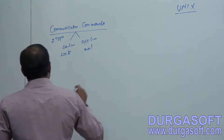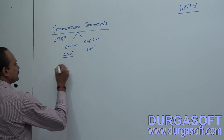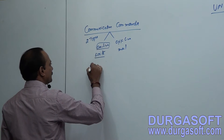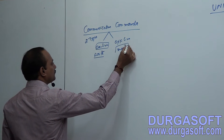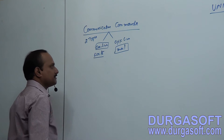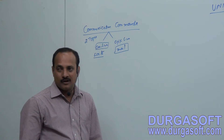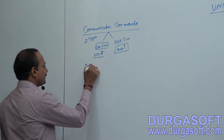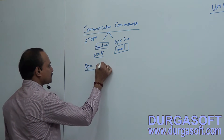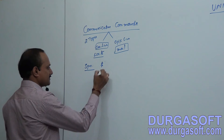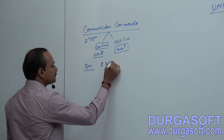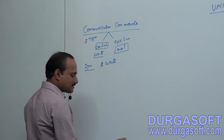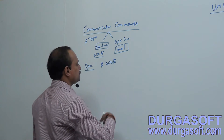The write command is used to communicate with a person online. The mail command is used to communicate with a person in offline mode. The write command is used to send online messages, so here both sender and receiver should be online — both should be in login position.